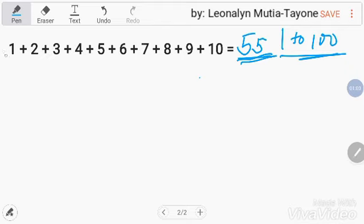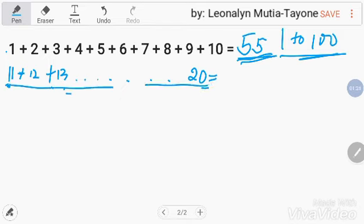May sagot ka na na 55 sa 1 to 10. Ngayon, umpisa na naman sa 11 plus 12 plus 13 and so on hanggang matwinti siya. Anong pagkakaiba sa una at saka yung pangalawa? Lahat ng numbers na 1 to 10, mayroong dagdag na 10. So, 10 times 10 dito, that is 100. So, ang answer mo is 155.